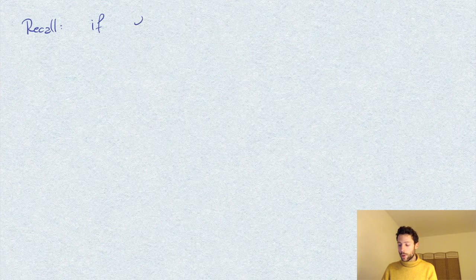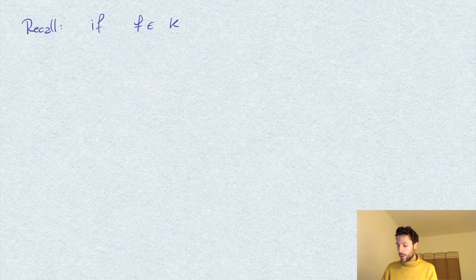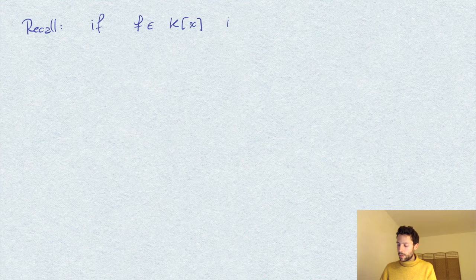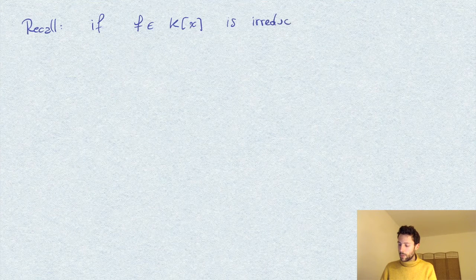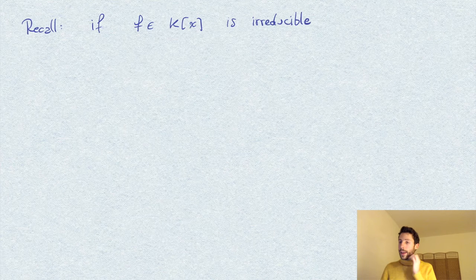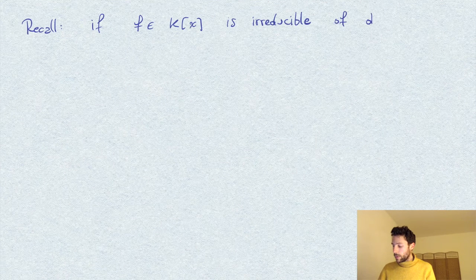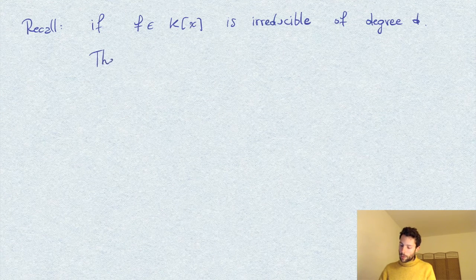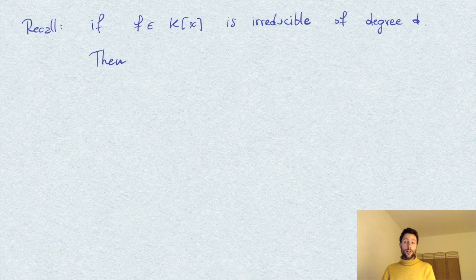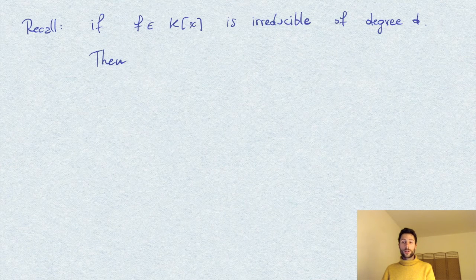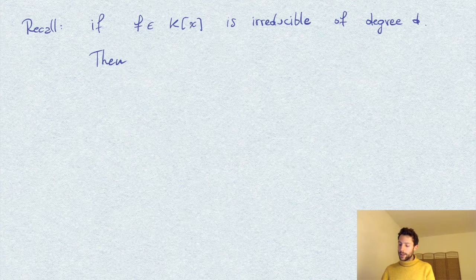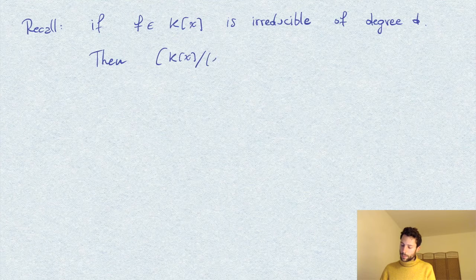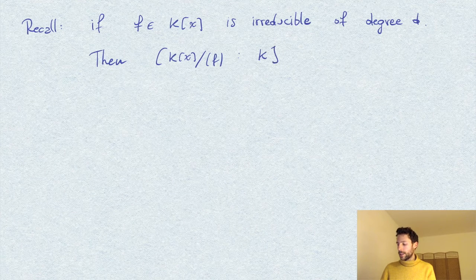That is, if we have an irreducible polynomial with coefficients in a field K of degree d, then the degree of the field extension given by K[x] by the ideal is precisely this degree d as an extension of K.